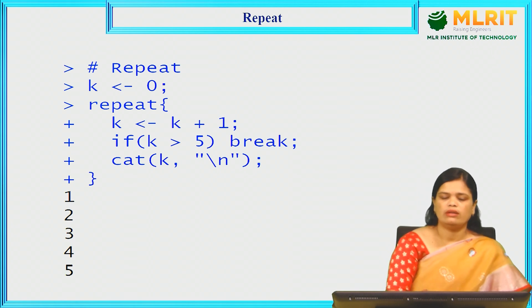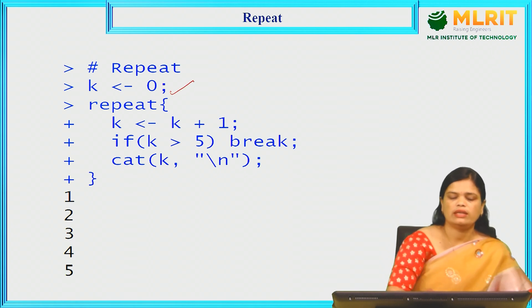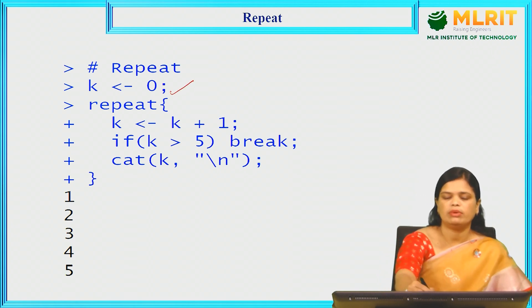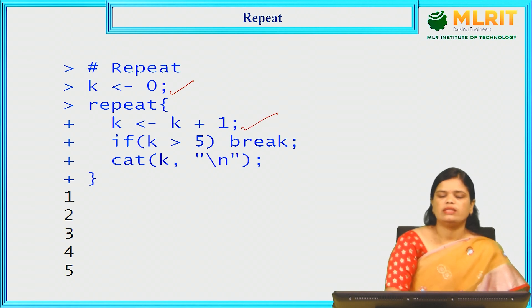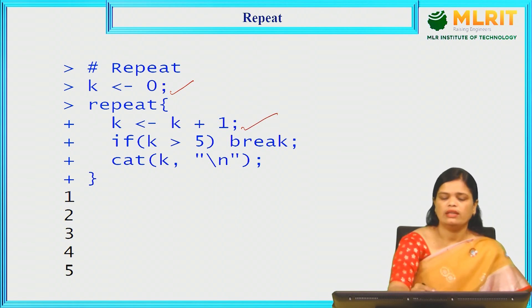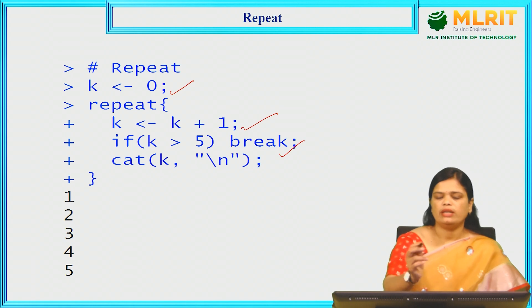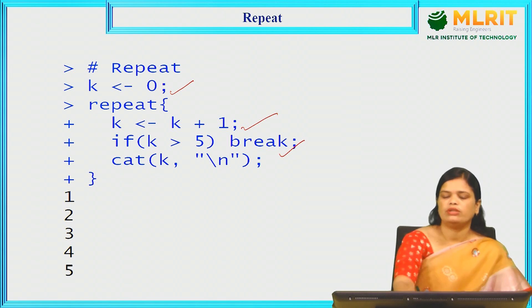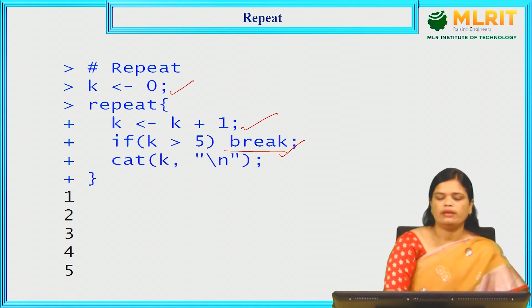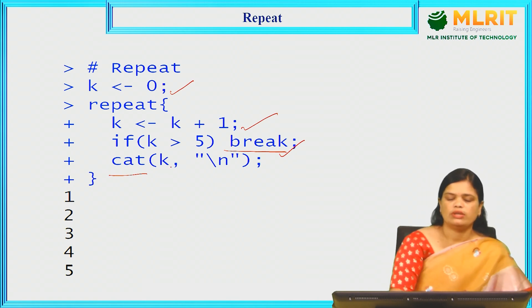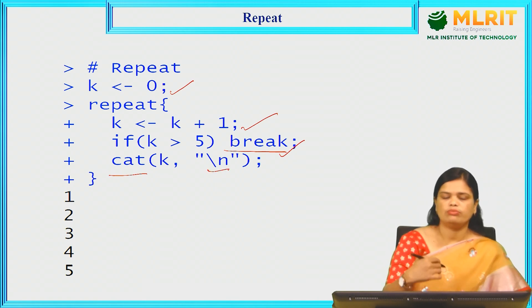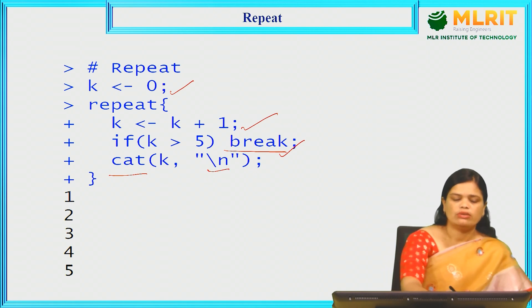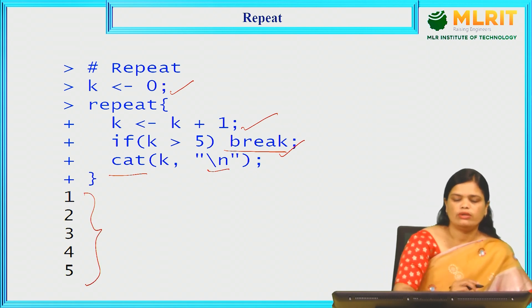For the repeat statement, we are assigning the k value to 0 and incrementing k, then checking the condition k is greater than 5. With repeat, we have to use it in combination with the break — once the loop completes, it needs to break from the repeat. We are using concatenation and \n to print the values on the next line, and it will be printed from 1 to 5.